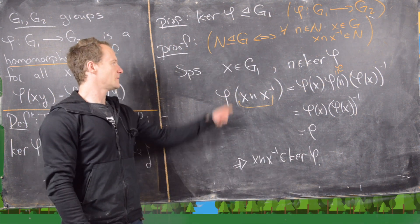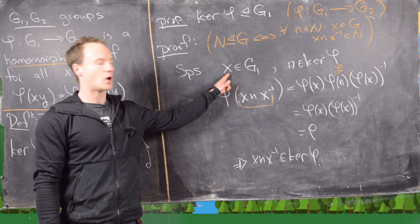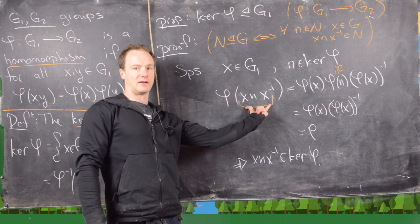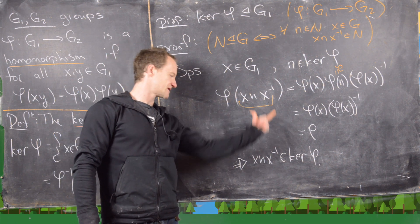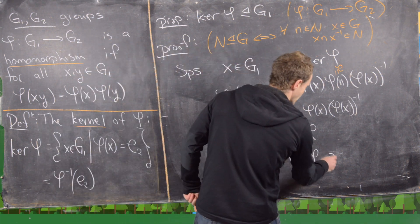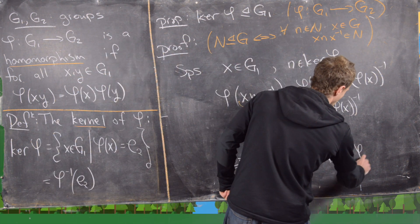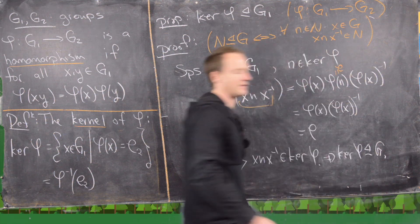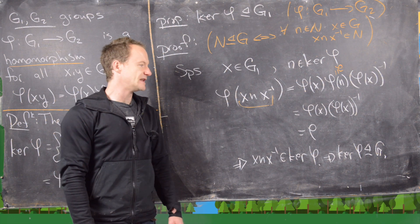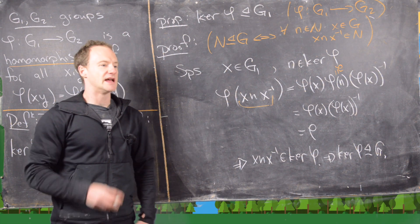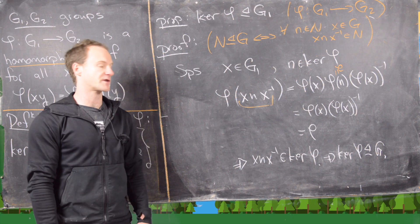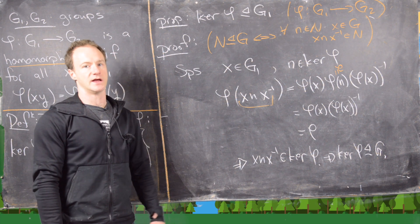We took an element from the group as a whole and an element from the kernel, and showed that the conjugate element is also in the kernel. That's exactly what's needed for the kernel to be a normal subgroup of the domain. Recall from a previous video that anytime you have a normal subgroup, it's important to look at the quotient group — and that's exactly what we'll do in a forthcoming video.